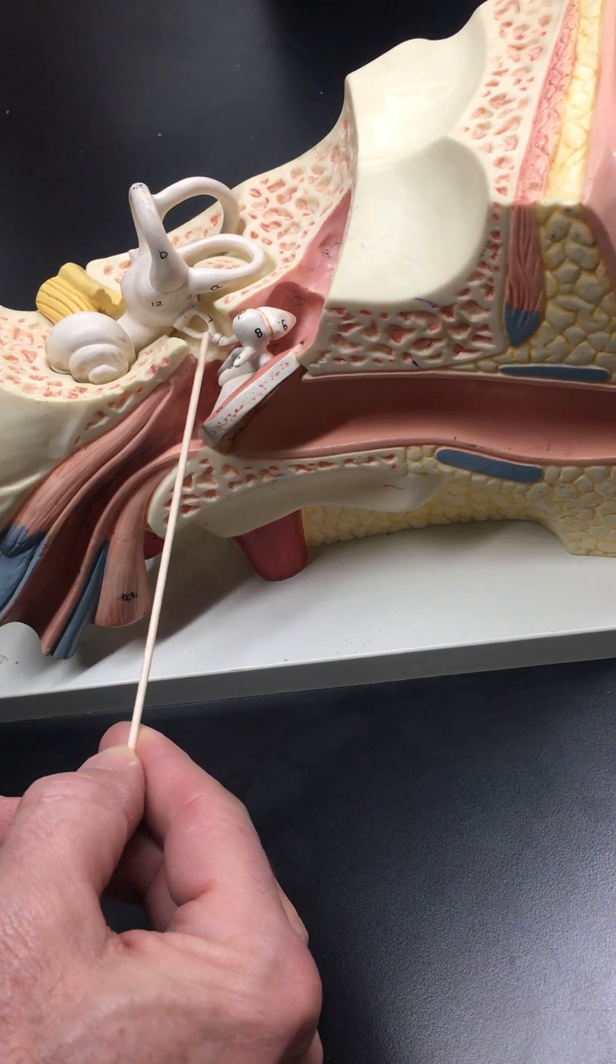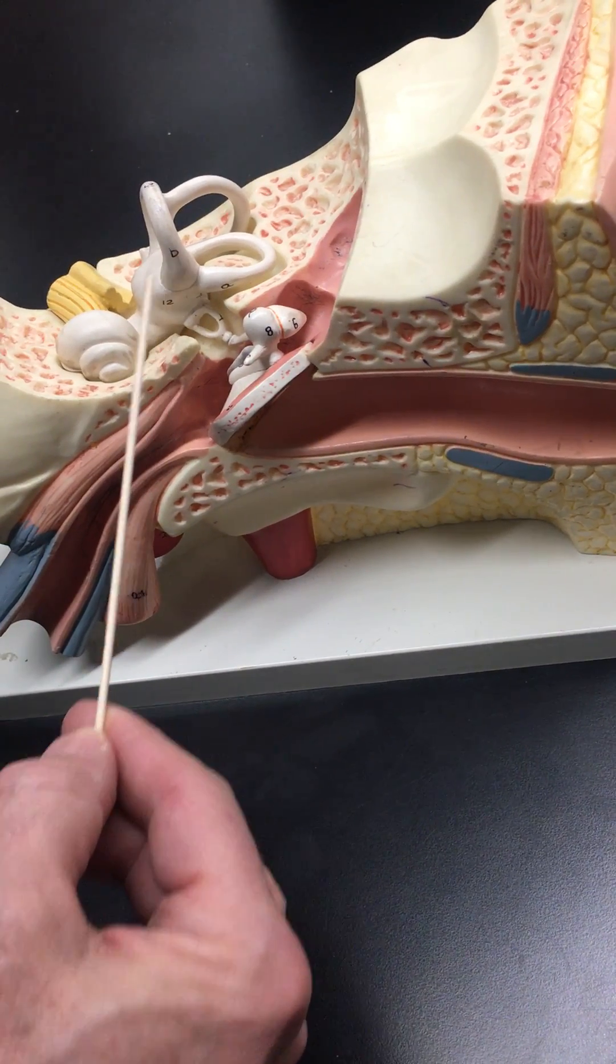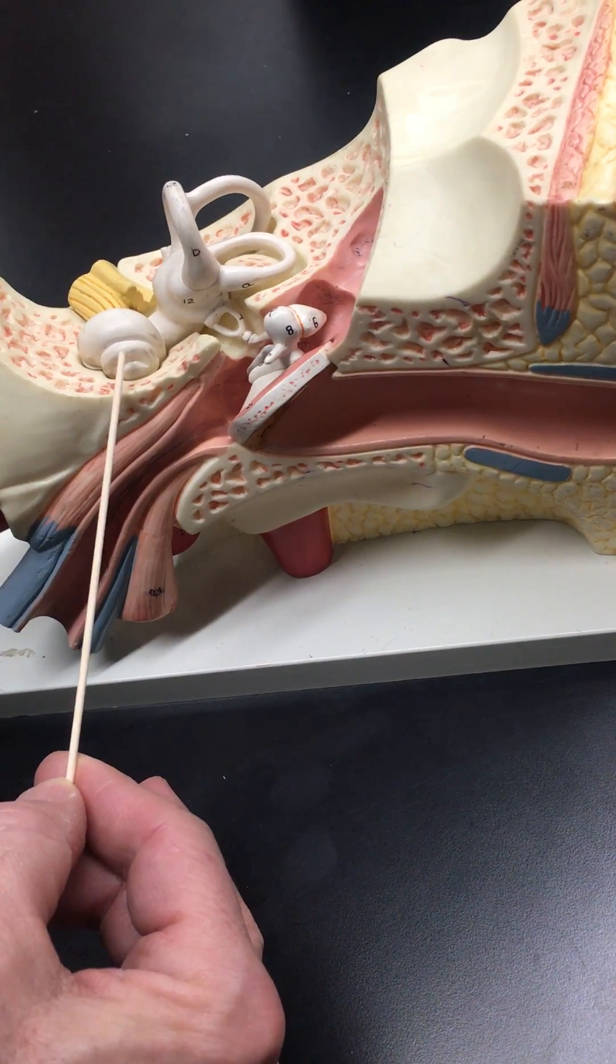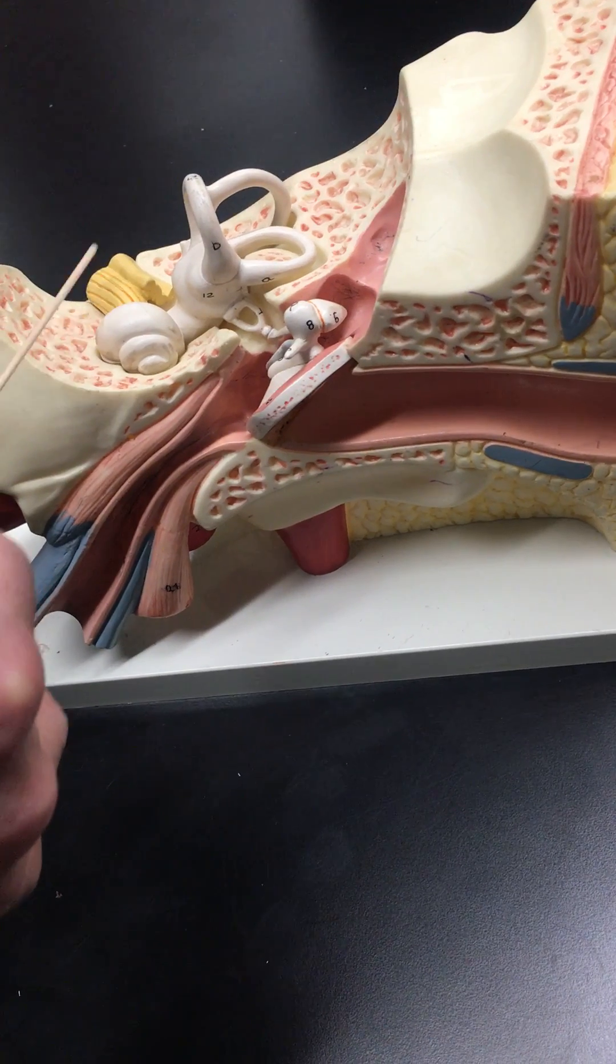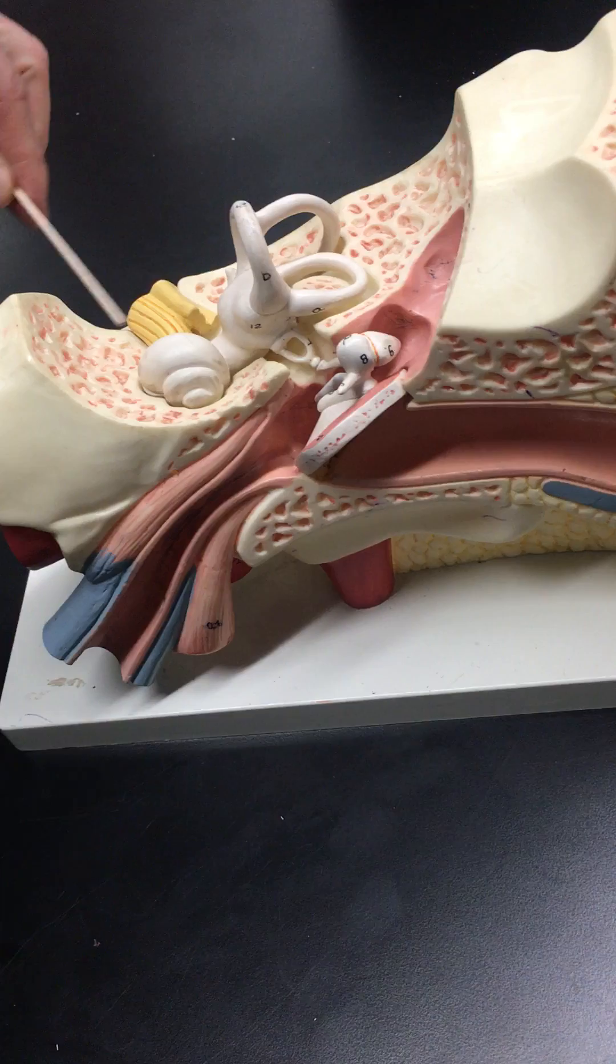Stapes, semicircular canals—three of them—cochlear, vestibular cochlear nerve, external acoustic meatus.